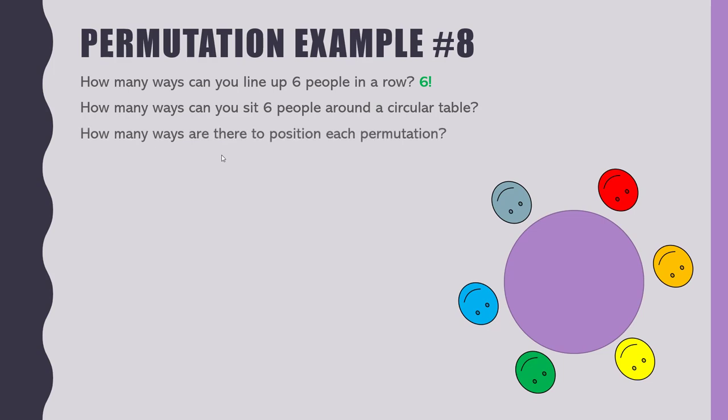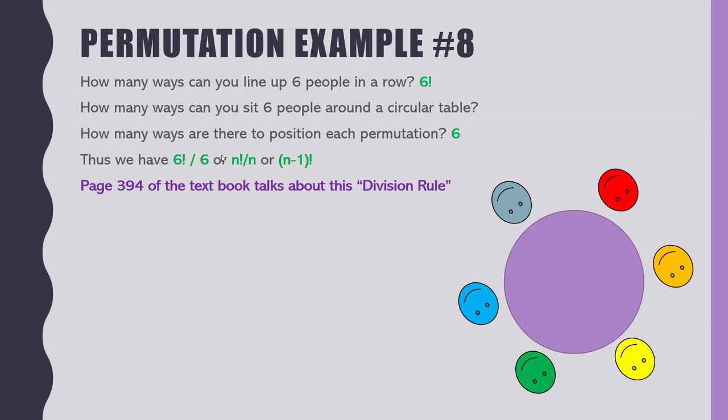So for circular permutations: n! / n = (n-1)!. When you put n items in a circle, each of the n! arrangements has n rotations that are identical, so you divide by n. This connects to the division rule in the textbook — page 394, chapter 6.1, 'The Basics of Counting.' It's only a couple paragraphs but written quite densely, so read it carefully. Any questions about circular permutations?